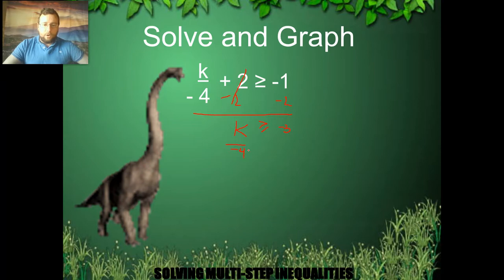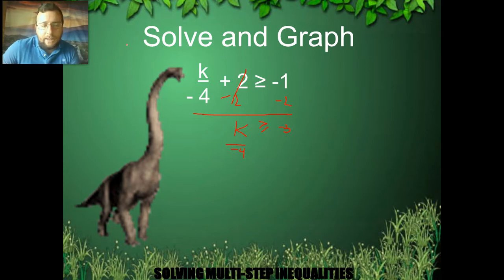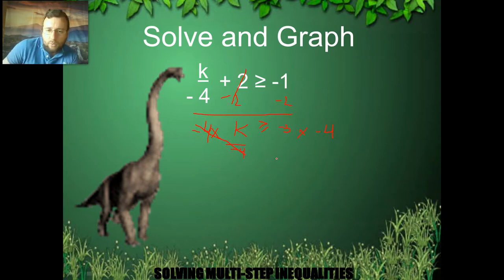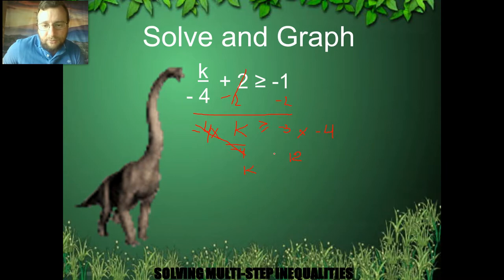I still have to get rid of this — not 4, but negative 4. Since it's dividing, I multiply to get rid of it. I multiply both sides by negative 4. The negative 4s cancel out on the left side. On the right, negative 3 times negative 4: negative times negative is positive, and 3 times 4 is 12, so I get 12 on the right side. k is by itself now on the left. Because I multiplied by a negative, I must flip the inequality sign to smaller than or equal to.